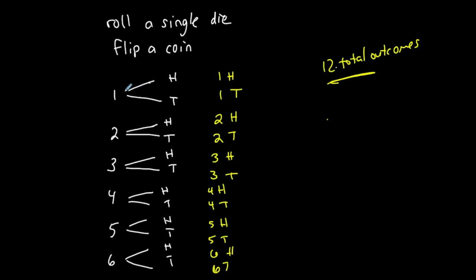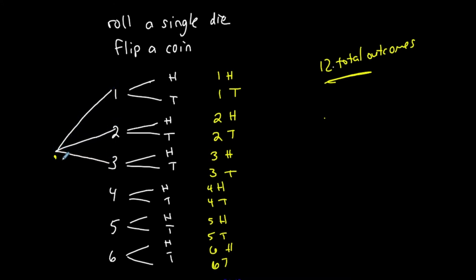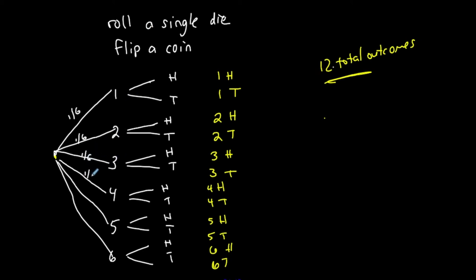The other part of rolling a die and flipping a coin is calculating the probability for a specific event. Starting from the beginning, there are six possible outcomes for the initial die roll, and the probability of each is one out of six. So there's a one-sixth chance of rolling a one, a one-sixth chance of rolling a two, a one-sixth chance of getting a three, and so on.